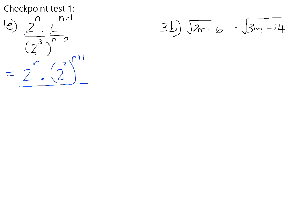And here we can apply exponential law, 2 cubed multiplied by n minus 2. We need to times the 3 by the n and the negative 2, so that gives us 2 to the power of 3n minus 6. If we do the same thing now in the numerator, we need to multiply the 2 by the n and the 2 by the positive 1, which gives us 2n plus 2.